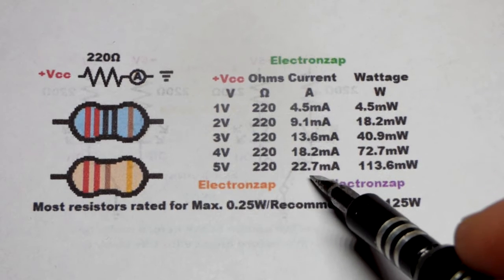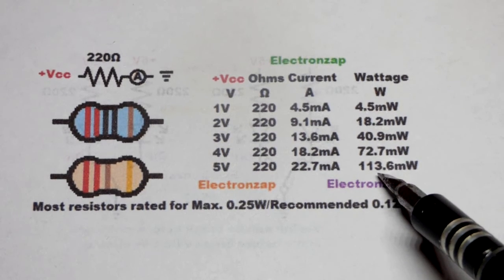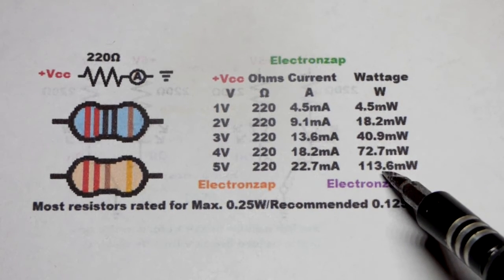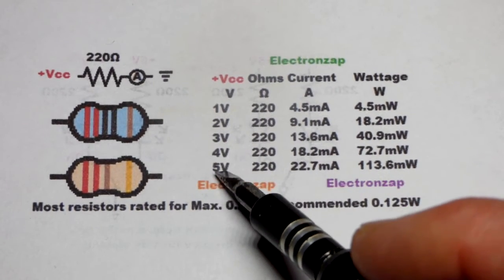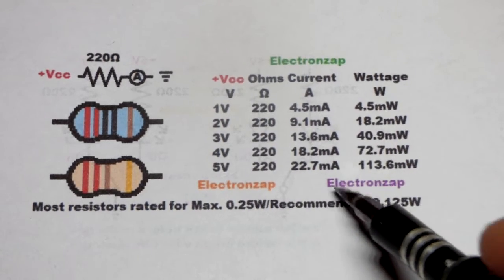So there you can see 5 times the voltage, 5 times the current, 25 times the wattage that we had there before. But if you have a 220 ohm resistor, you should be okay with 5 volts.